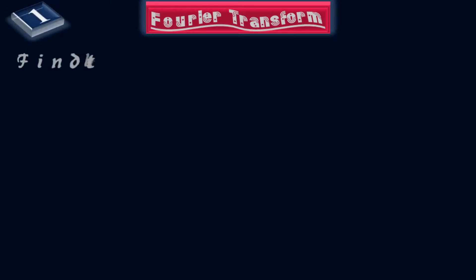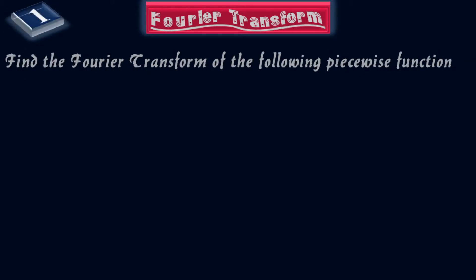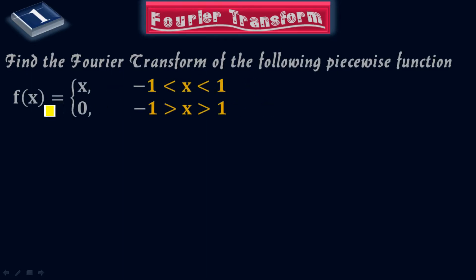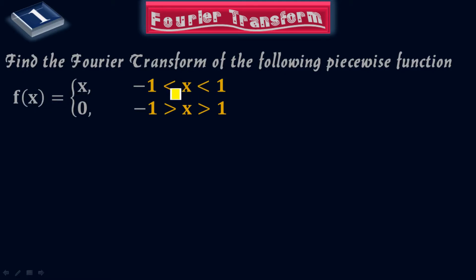Now let's solve some problems using the Fourier Transform. The very first problem is problem number one: find the Fourier Transform of the following piecewise function, where f(x) equals x when x is greater than negative one and less than positive one, and f(x) equals zero if x is less than negative one or greater than positive one.